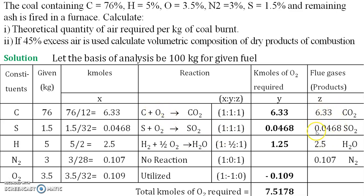Along with these combustion products, nitrogen is also obtained as one of the flue gas components. Nitrogen must be calculated separately. Oxygen will only be present in the product if excess air is provided — if there is no excess air, no oxygen will be present because all oxygen is utilized in the combustion. CO2, SO2, and water are determined from the first table and will be used in the flue gases calculation.